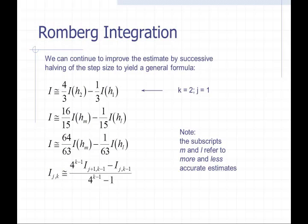We can continue to improve the estimates by successive halving of the step sizes to yield a general formula, which I show here. But the only one we're going to apply in this class is the first one. Take note that we can continue to improve our estimate by doing this weighting scheme. And that ends the lecture on Richardson's extrapolation.